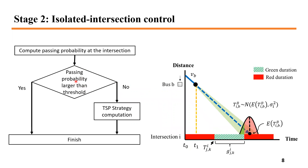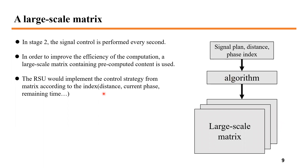In stage two, isolated intersection control, we calculate bus arrival time as a normal distribution and compute the passing probability at the intersection to decide how to adjust the signal. If the passing probability is larger than the threshold, the TSP strategy is computed and sent to the signal controller. To improve computation efficiency, a large-scale matrix containing pre-computed content is used in stage two. The RSU implements the control strategy from the matrix according to the index, including distance between bus and intersection, and the current phase and remaining signal time.